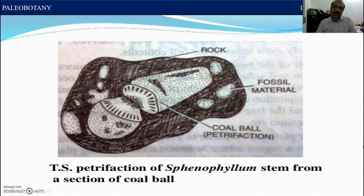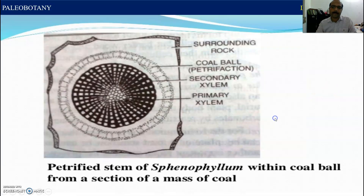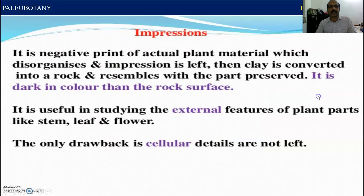This is the petrification of Sphenophyllum stem from a section of a coal ball. The coal ball is in the petrification of Sphenophyllum. This is rock, fossil material, coal ball petrification. Petrified stem of Sphenophyllum within a coal ball from a section of mass of coal — surrounding the rope, coal ball, secondary xylem, primary xylem, etc.